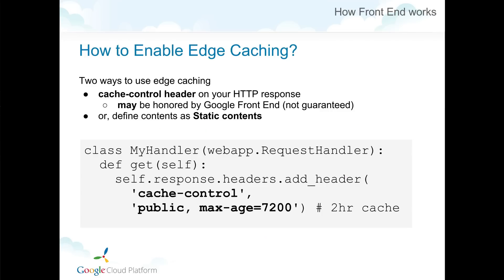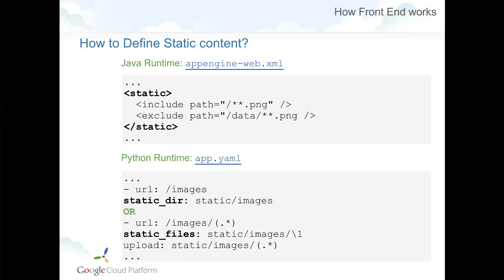There are two ways to enable edge caching. One is setting the cache-control header on your HTTP response, setting the expiration period to tell Google's front end to cache the content. Another is using static content configuration. If you have static HTML or image files served from the app server, those cost you. Instead, you can define static content in the configuration file so that all that content is served by the static servers.